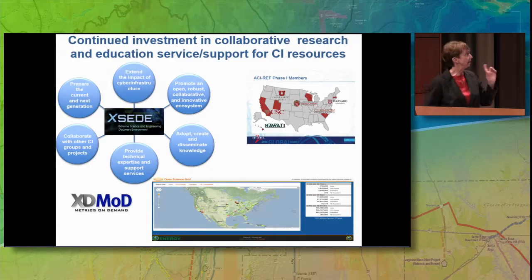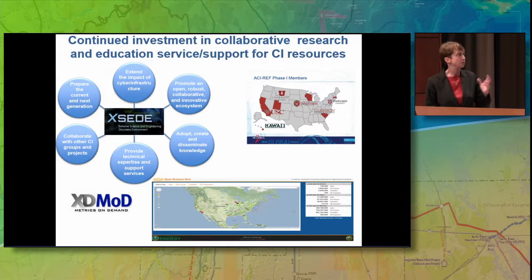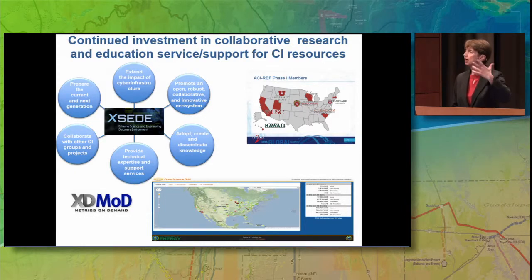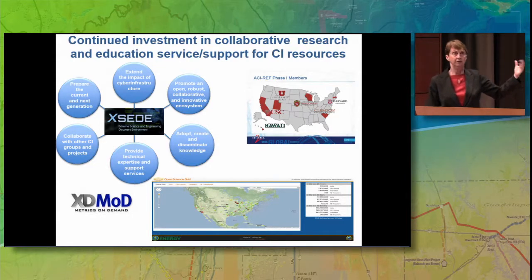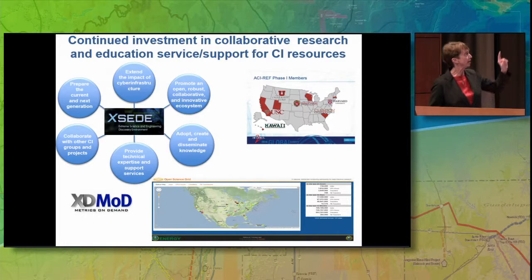Another area we're focusing on is investment in collaboration. There's a research group — Harvard is leading it — with five different organizations across the country working together on research and education: can we provide advice to the rest of the community? If we're funding 2,000 universities out of 4,200, not everyone will have access to the best. Can a subset of people help pass information out and be advisors to each other? This is one of the experiments going on.